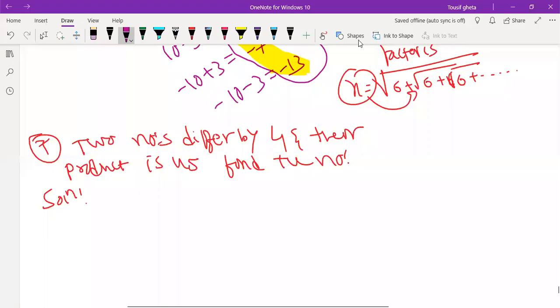So let two numbers be. One number is x. See they are telling two numbers differ by 4. One number, I mean two numbers are there. They differ by 4.